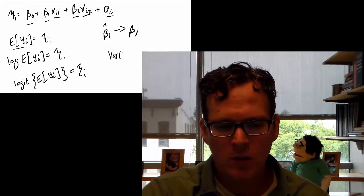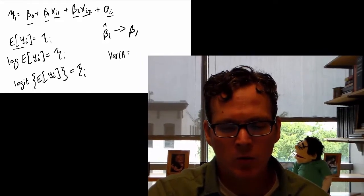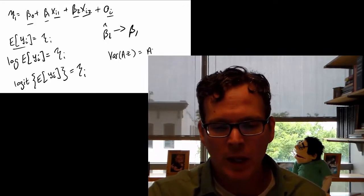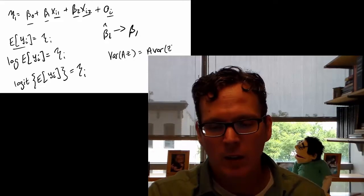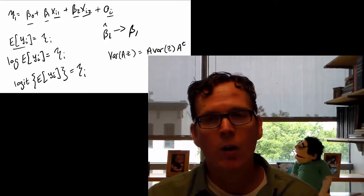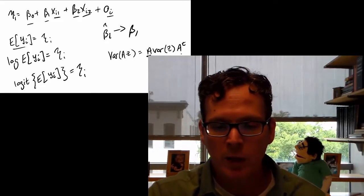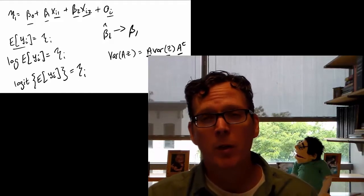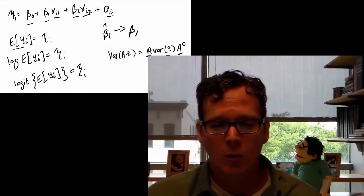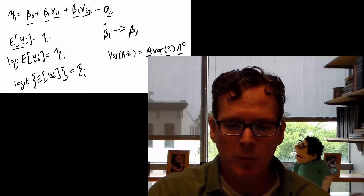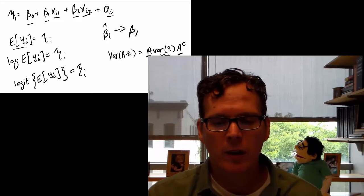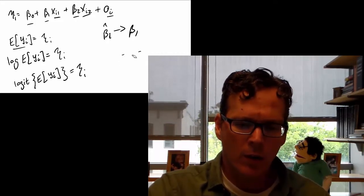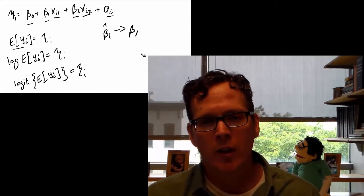This is kind of a weird name and you don't really need to understand the math, but I'll just show you why they call it a sandwich variance estimate. If you take something like the variance of A times Z, where Z is random and A is a matrix, this works out to be A variance of Z A transpose. So all I'm trying to tell you here is that they're calling the matrix on the outside A to be the bread and the variance of Z part in the middle to be the meat. So that's a sandwich, or if you're like me, maybe the middle part's tofu or something like that.